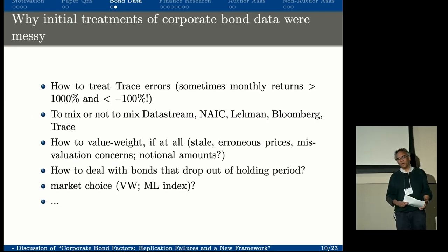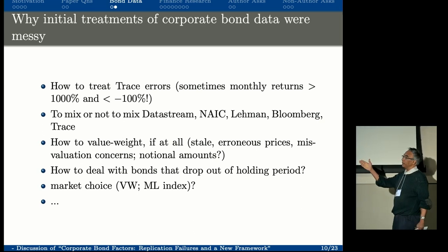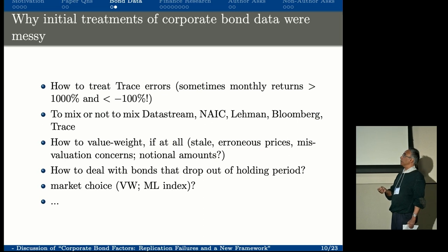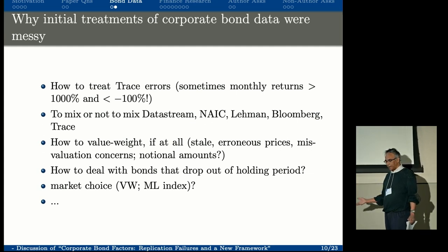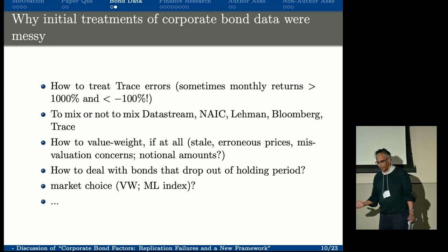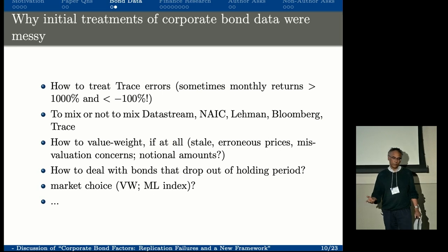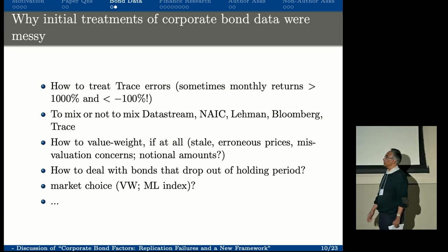Let me move on to what we can do to avoid crises like non-replication. There are a lot of decisions to be made in these databases. Trace returns are often over a thousand percent and incredibly less than negative 100 percent, and how to treat them is something previous work really doesn't address. We have databases you can mix and match—you can add the data stream and NAIC or not. We need a standardized way of treating these things. How to weight is itself an issue because bond prices can be stale, so you can't necessarily market-cap weight. A better approach is to weight by amount outstanding—notional amount—because there are no split issues in bonds. But results seem sensitive to that, and we need to standardize it.